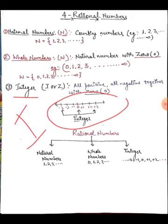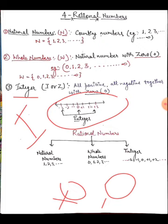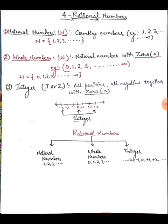One very important note about integers: zero is neither positive nor negative. We cannot write zero with a plus sign or a minus sign. So this is all about the foundational number types. Now the main topic is rational numbers.